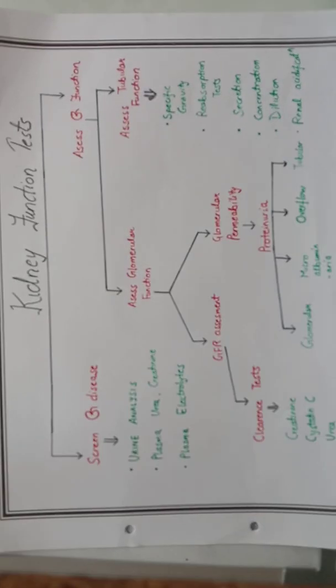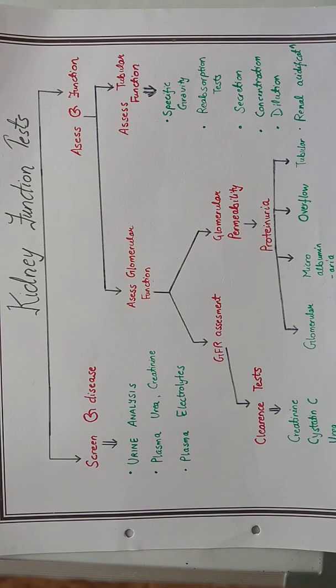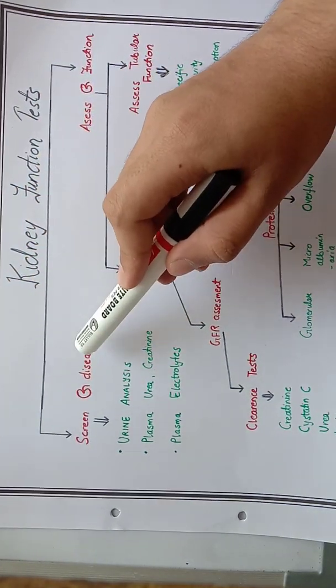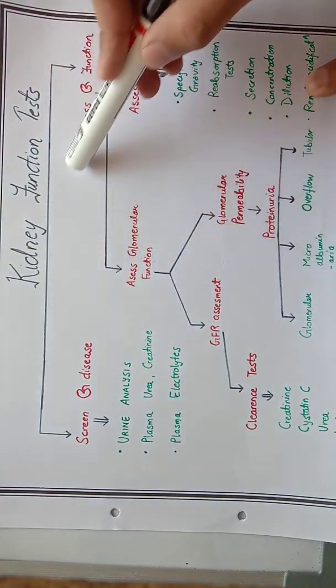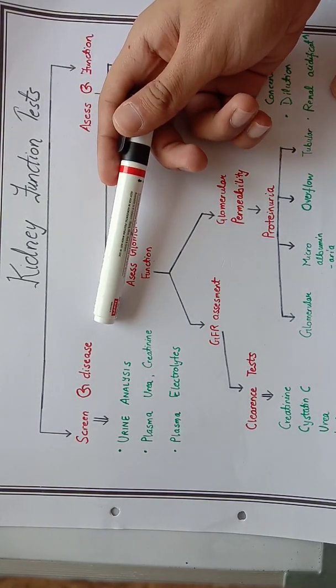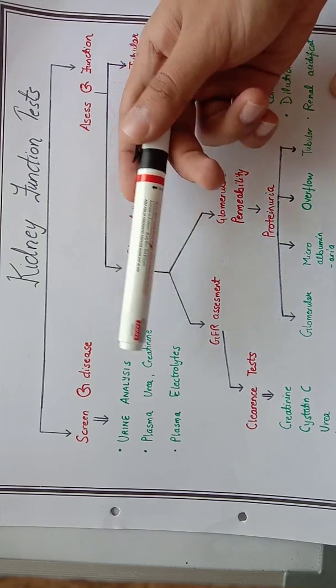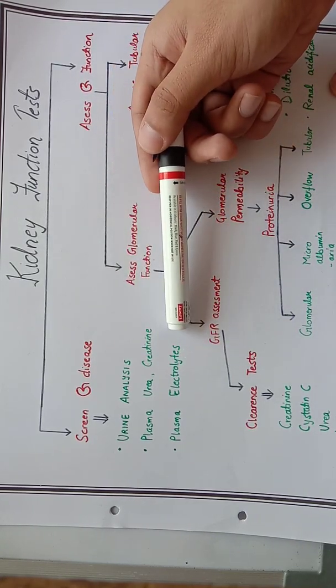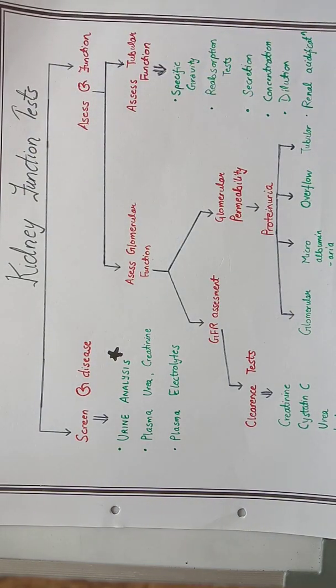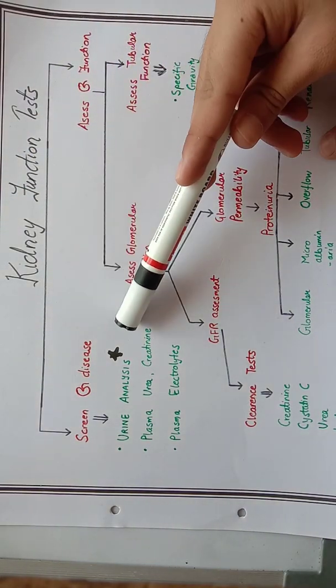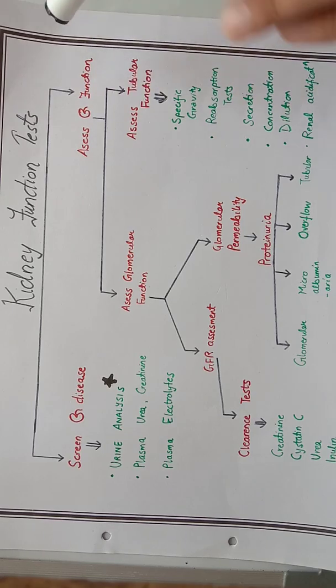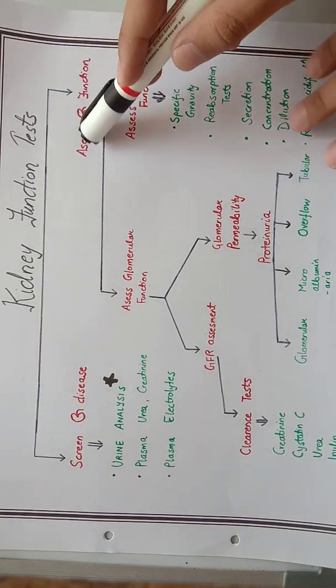So you are a doctor, you have a patient. If you suspect kidney problems, you will order kidney function tests. First, you have general screening tests: urine analysis, plasma urea, creatinine, and plasma electrolytes. This includes the urine analysis which I hope you have done in biochem practicals. We will see the details of urine analysis.